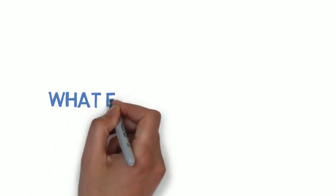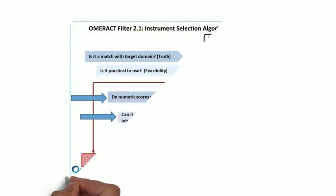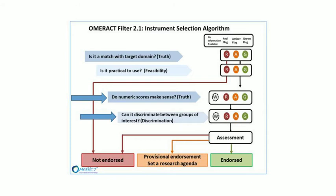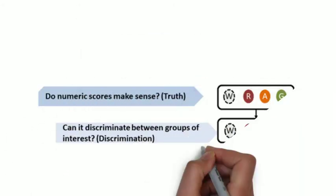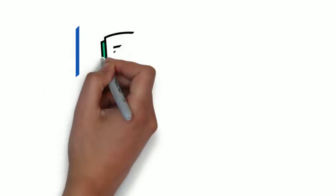In this step, we will find and create the evidence for the OMRACT filter 2.1 requirements. What evidence do we need to answer the next two questions in OFISA? Do the numeric scores make sense? And can it discriminate between groups of interest? These two questions are answered by building a body of evidence on how the instrument performs across the two questions.